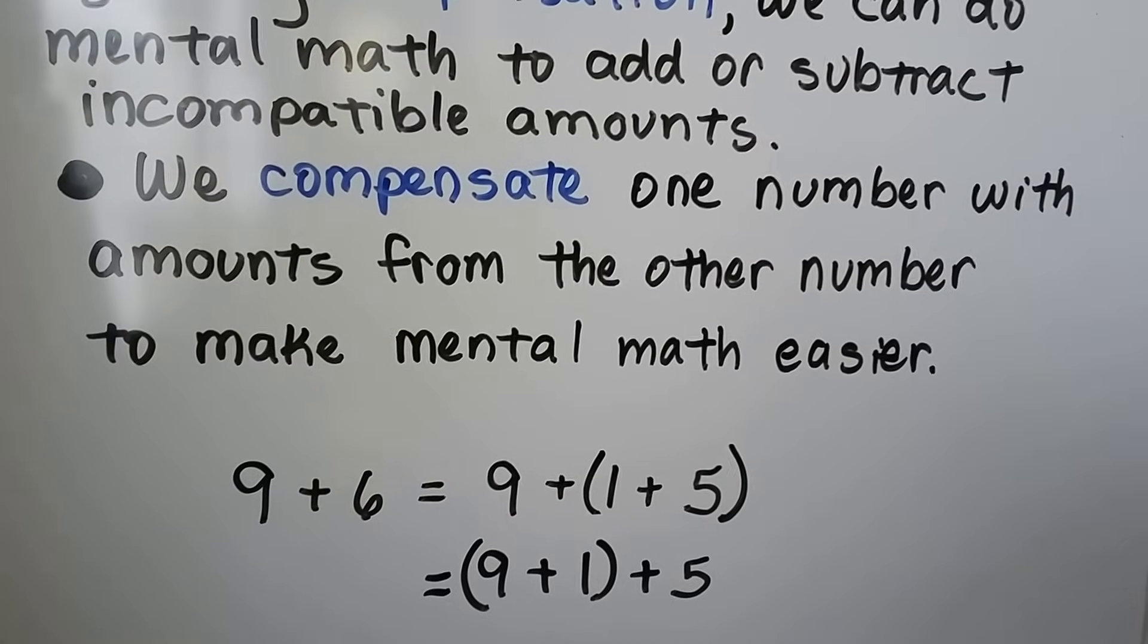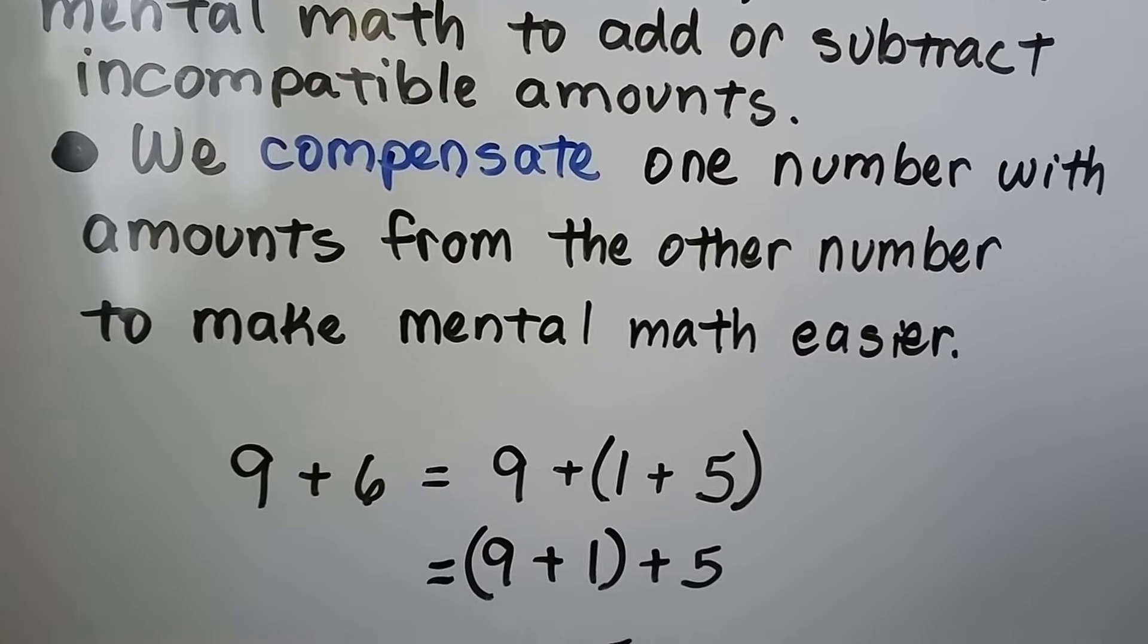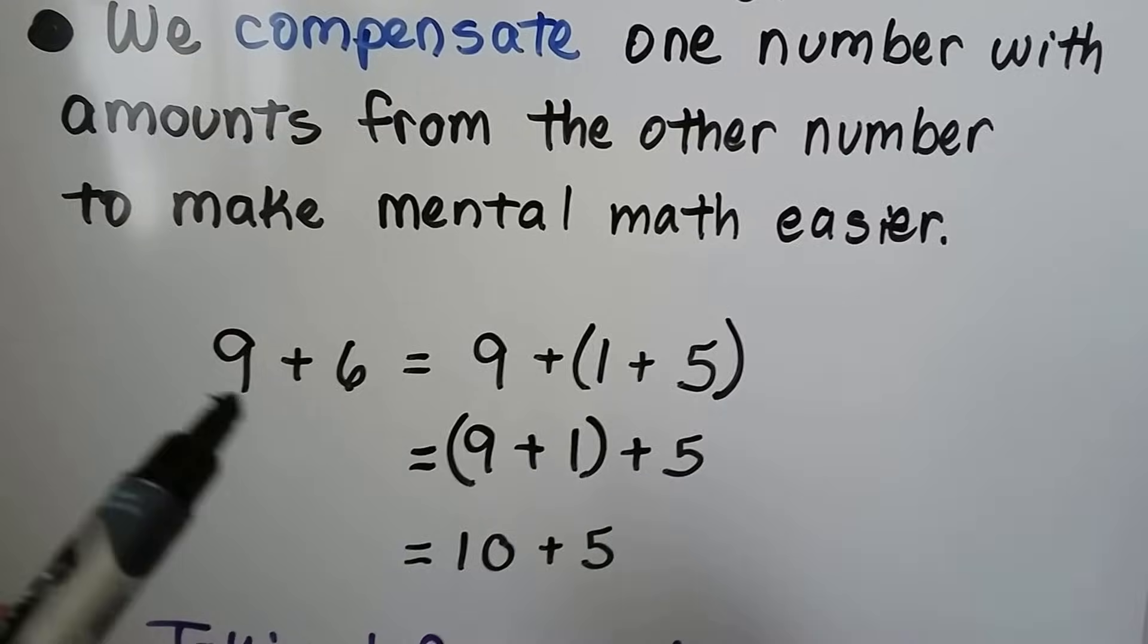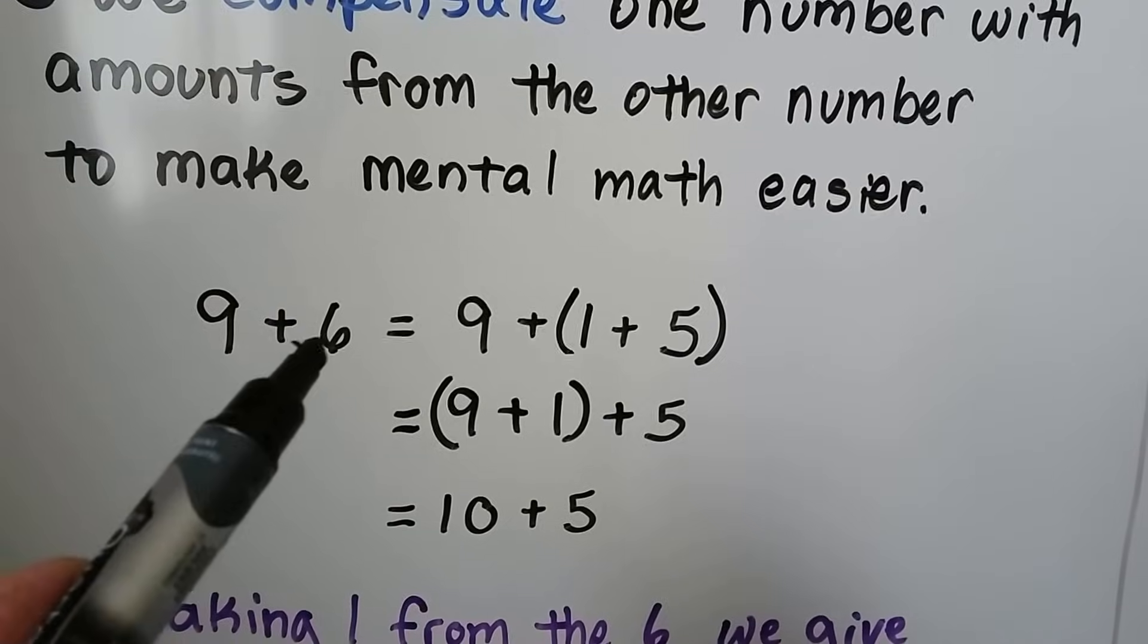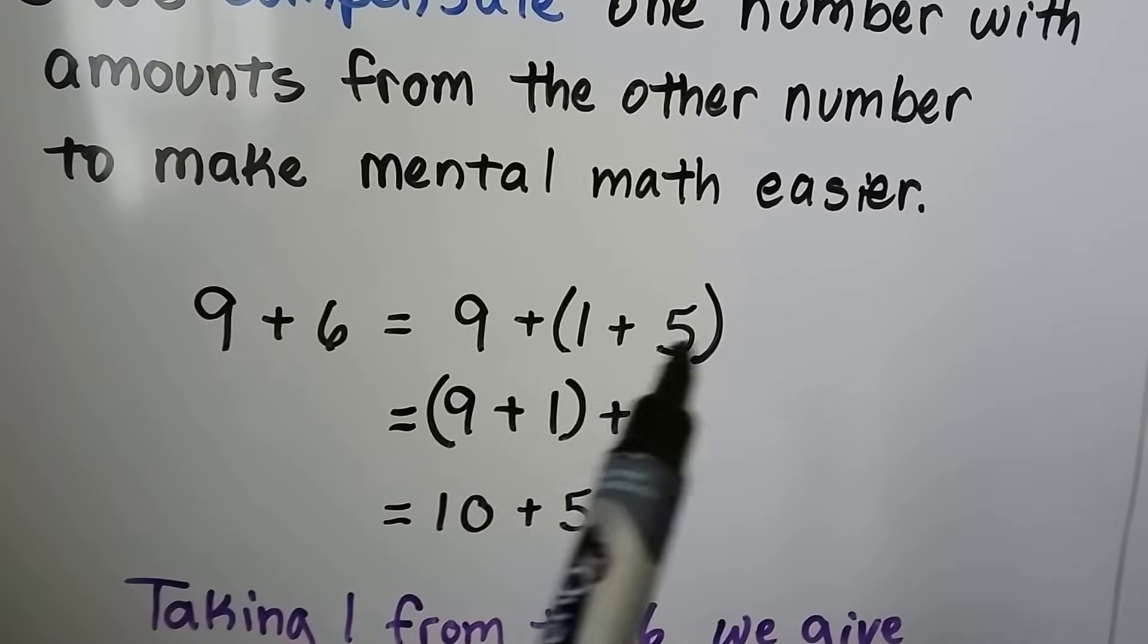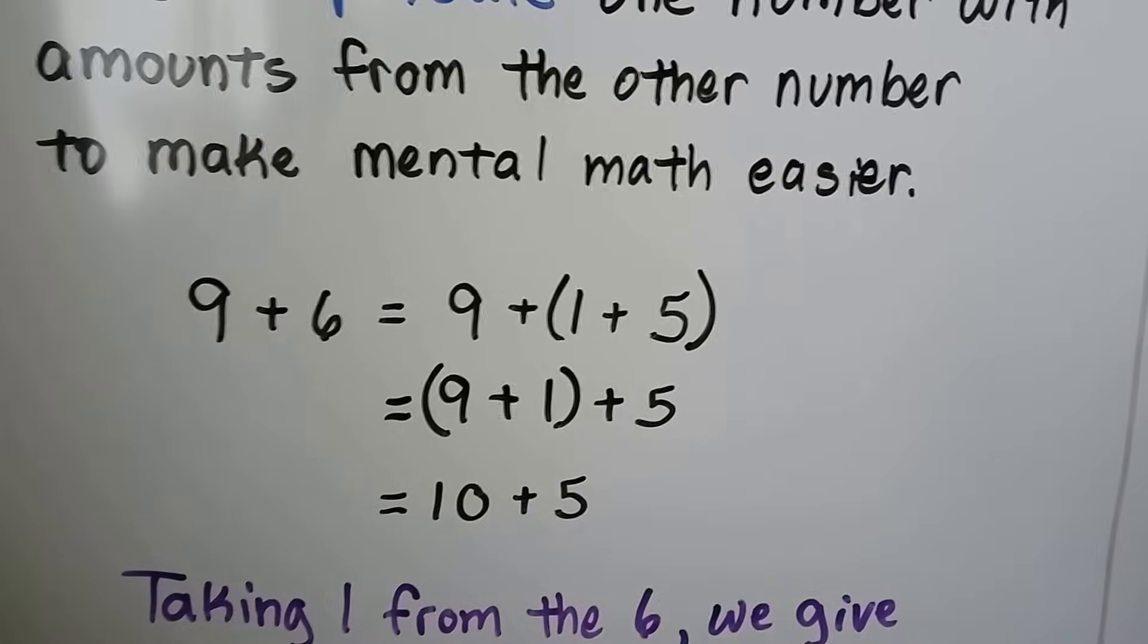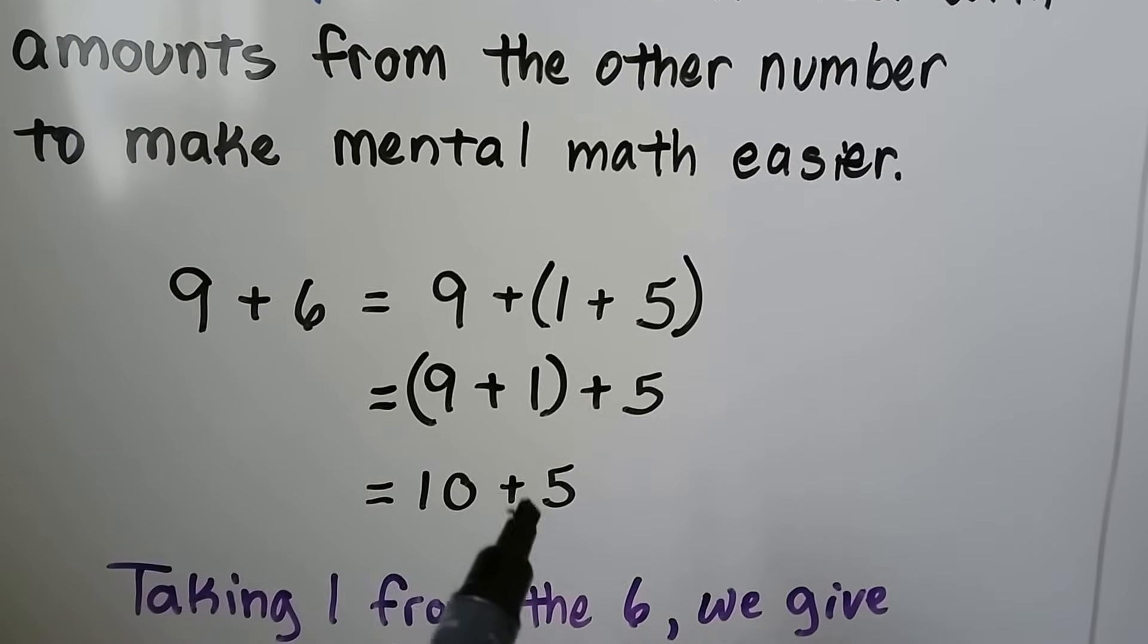We compensate one number with amounts from the other number to make mental math easier. For addition, if we have 9 plus 6, it would be easier to add 10 to 6, wouldn't it? Because 6 is 1 plus 5, we take the 1 away from the 6, we give it to the 9, and this is mental math. That would give us 10 plus 5.